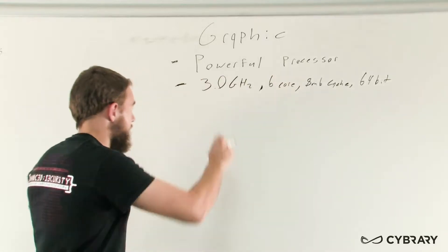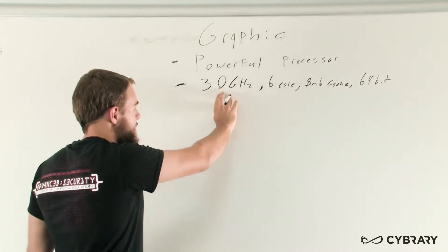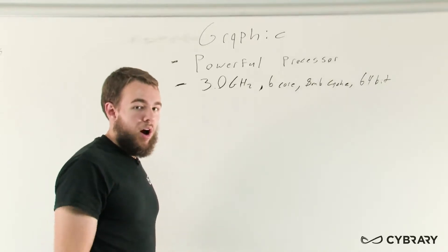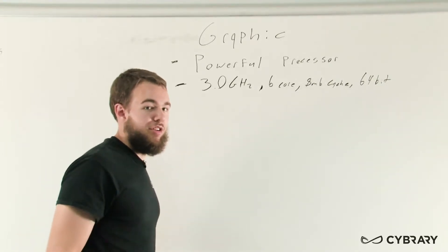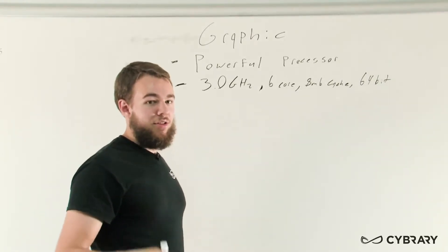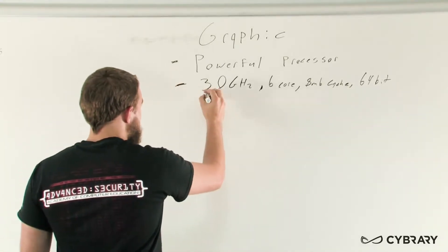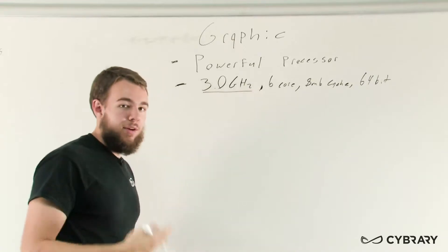Breaking this down, our 3.0 GHz is our clock speed. That's the speed at which our processor can actually process instructions, make decisions, and make those calculations one at a time. We want that to be high so that it can quickly go through those different processing tasks.